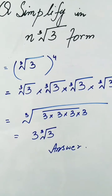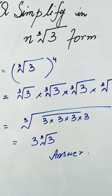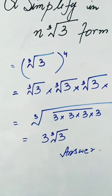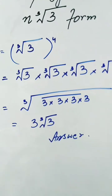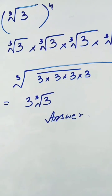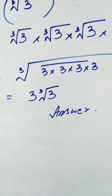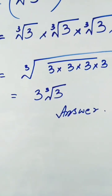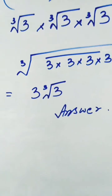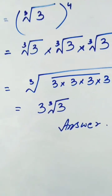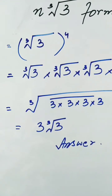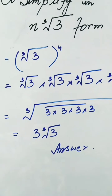Now we have another question where we simplify in the form n∛3. The question is: cube root of (√3)^4. Since there is a power of 4, we can write cube root of 3 four times. Collecting them under one root gives us 3 four times. As it is a cube root, a pair of three 3s comes out of the root and cube root of 3 remains inside the root. The answer is 3∛3, where n equals 3.